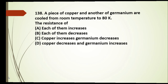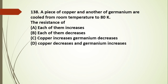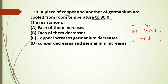Question 138: a piece of copper (a metal) and another of germanium (a semiconductor) are cooled from room temperature to 80 Kelvin. We need to find what happens to the resistance of each.